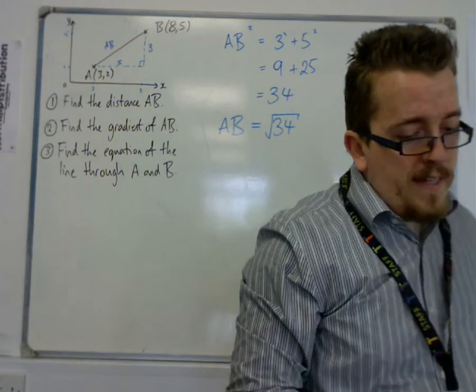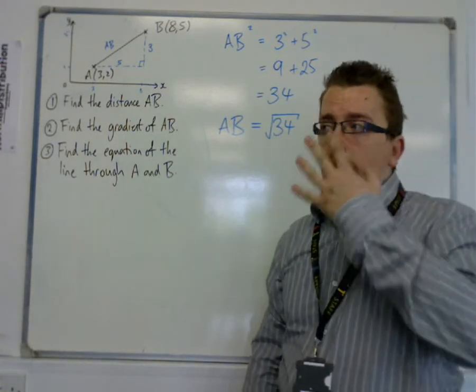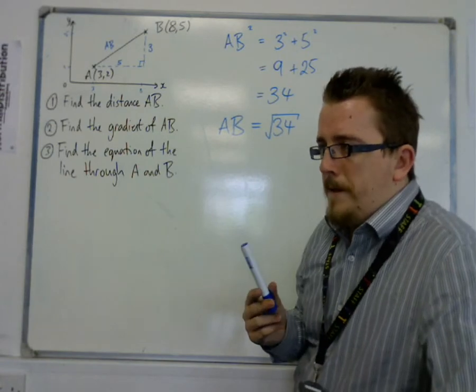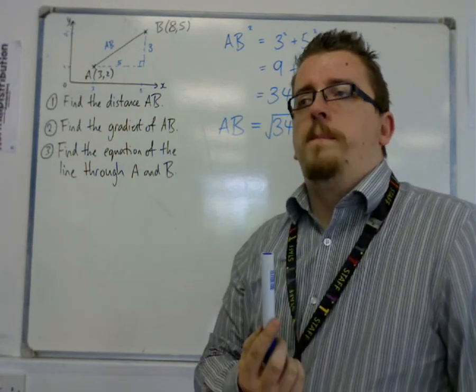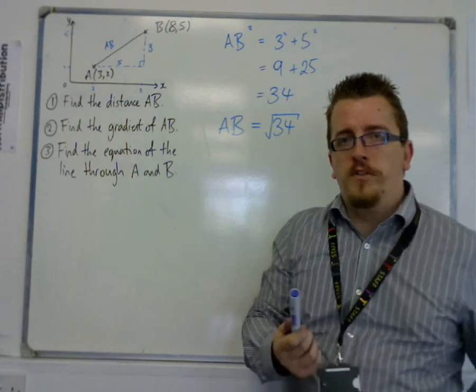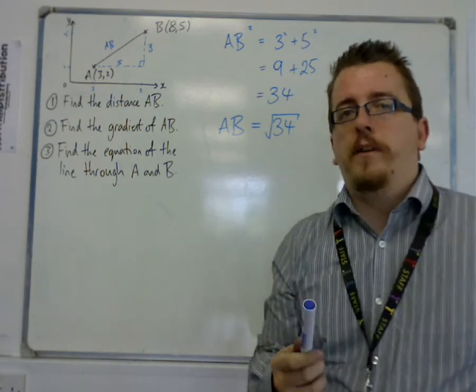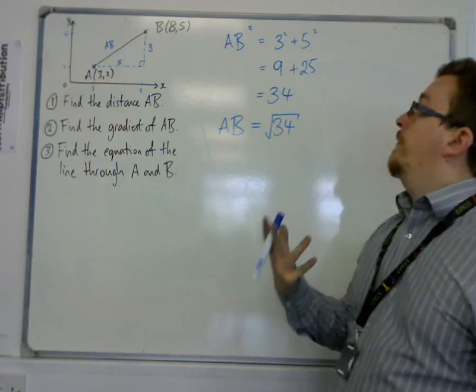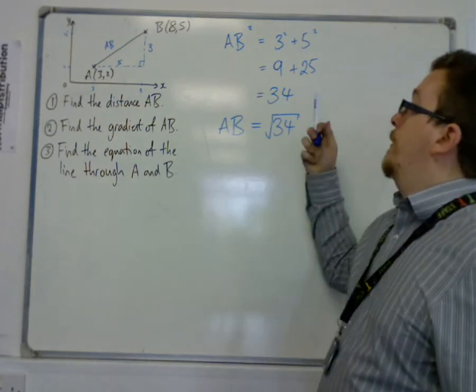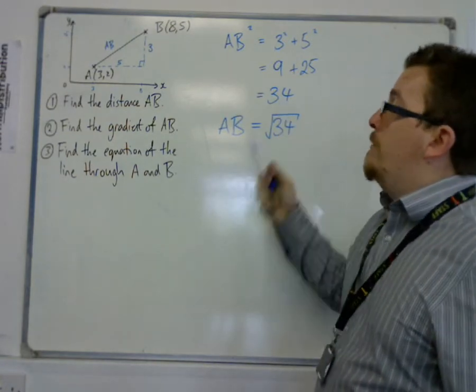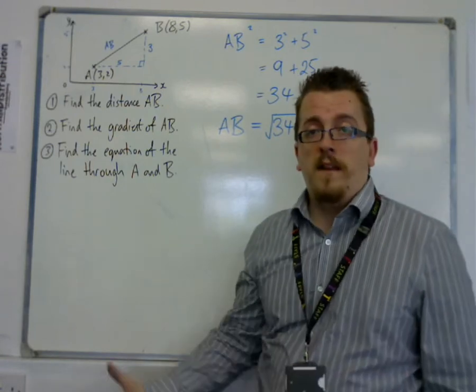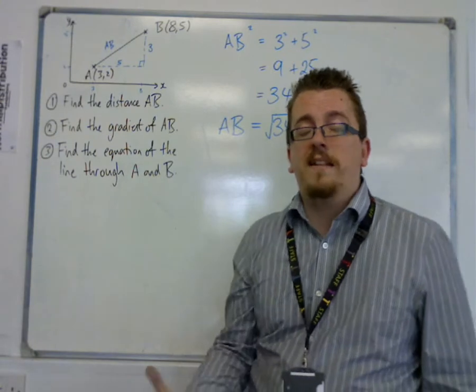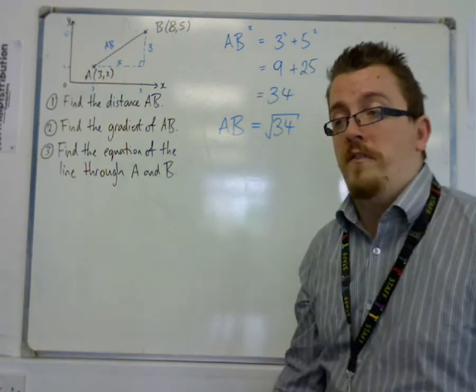Now don't get confused in the sense of where we did changing the subject of the formula. I introduced the square root, and it brought about a plus minus. Yes, in effect, the square root of 34, if you square root 34, then really you should get a plus minus. But because we're looking at distance, you can't have negative distance. So we're only looking at the positive number here.